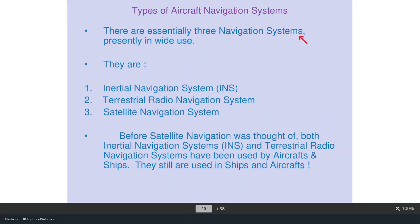There are essentially three navigation systems in use: the inertial navigation system INS, terrestrial radio navigation systems, and satellite navigation systems. Before satellite navigation was developed, both INS and terrestrial radio navigation were used by aircraft and ships, and they are still used today.